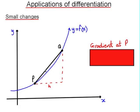To work out the gradient of a linear function, the horizontal distance from p to q is h, and if we think of p having the coordinates x, f of x